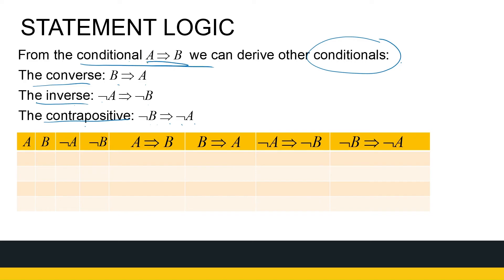If a conditional is true, its converse is not necessarily true. For example: 'If it rains, then the road is wet.' The converse — 'If the road is wet, then it rains' — is false, since the road could be wet for other reasons. The inverse 'If it's not raining, then the road is not wet' is also false. But the contrapositive — 'If the road is not wet, then it didn't rain' — is true.